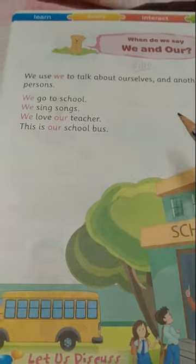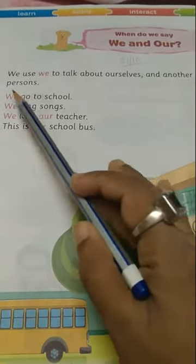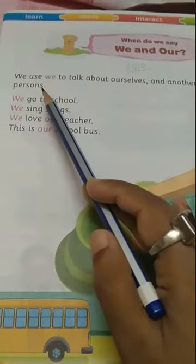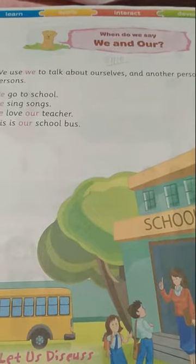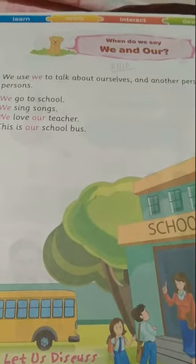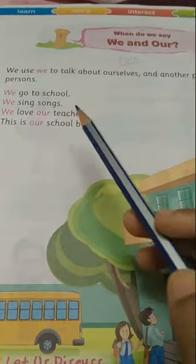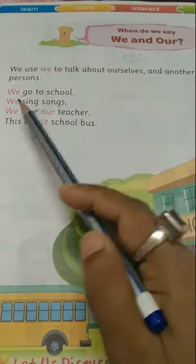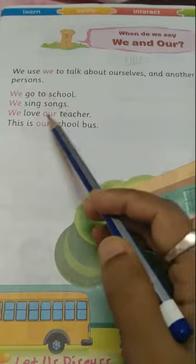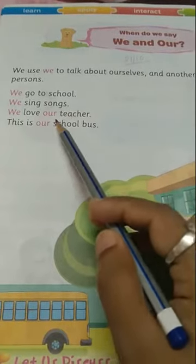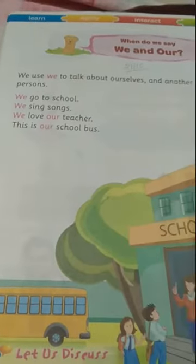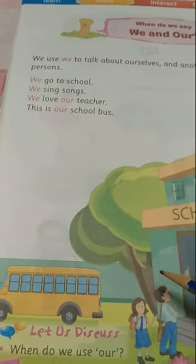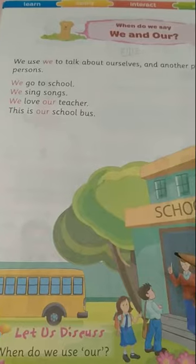We use 'we' to talk about ourselves and another person or persons. We go to school. We sing songs. We love our teacher. This is our school bus. In this way, we use 'we' and 'our'.